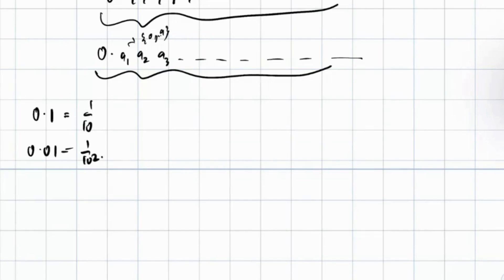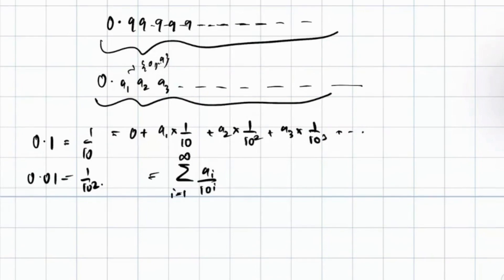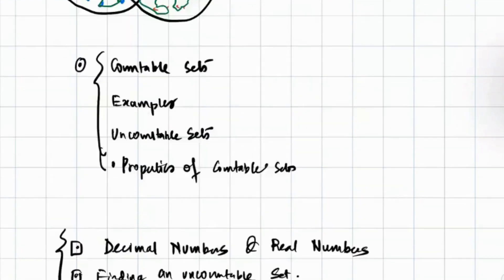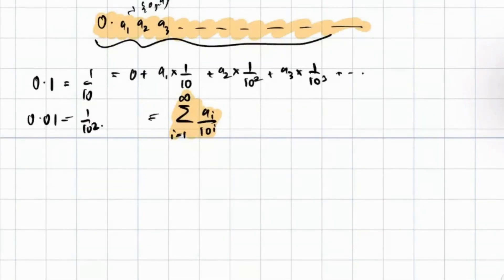So what is this? You can see, this is nothing but 0 plus a1 times 1 by 10 plus a2 times 1 by 10 squared plus a3 times 1 by 10 cubed. Therefore, you can write a summation of ai by 10 to the power i, i from 1 to infinity. This is very important. This is what we have done in our class 7, 8, probably have forgotten. But this is very important to understand.